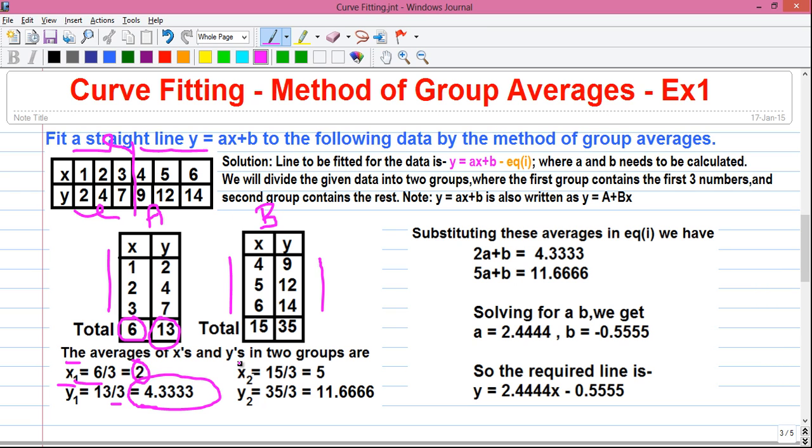And in group b, x2 bar is given by sum of all x values that is 15 divided by number of elements 3. So 15 by 3 equals 5. And y2 bar is given by sum of all y values divided by number of elements 3. So 35 by 3 equals 11.6666.